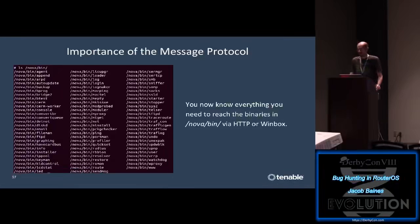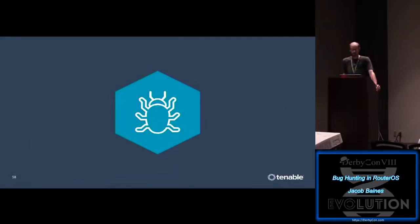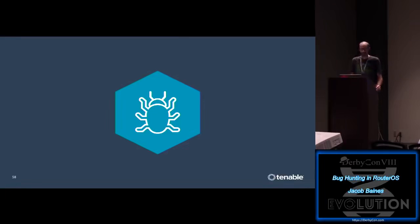Knowing the message protocol is truly fundamental to bug hunting RouterOS. Now that you know what system2 means, how handlers work, and how to format messages, you can reach any of the binaries in nova/flash/bin - which is a pretty large attack surface. I know what you're thinking: this guy titled his talk 'Bug Hunting in RouterOS' and hasn't presented a single bug in the first 30 minutes. Well we finally made it. I'm not done talking about protocol - not by a long shot - but we're ready to talk about three different bugs.